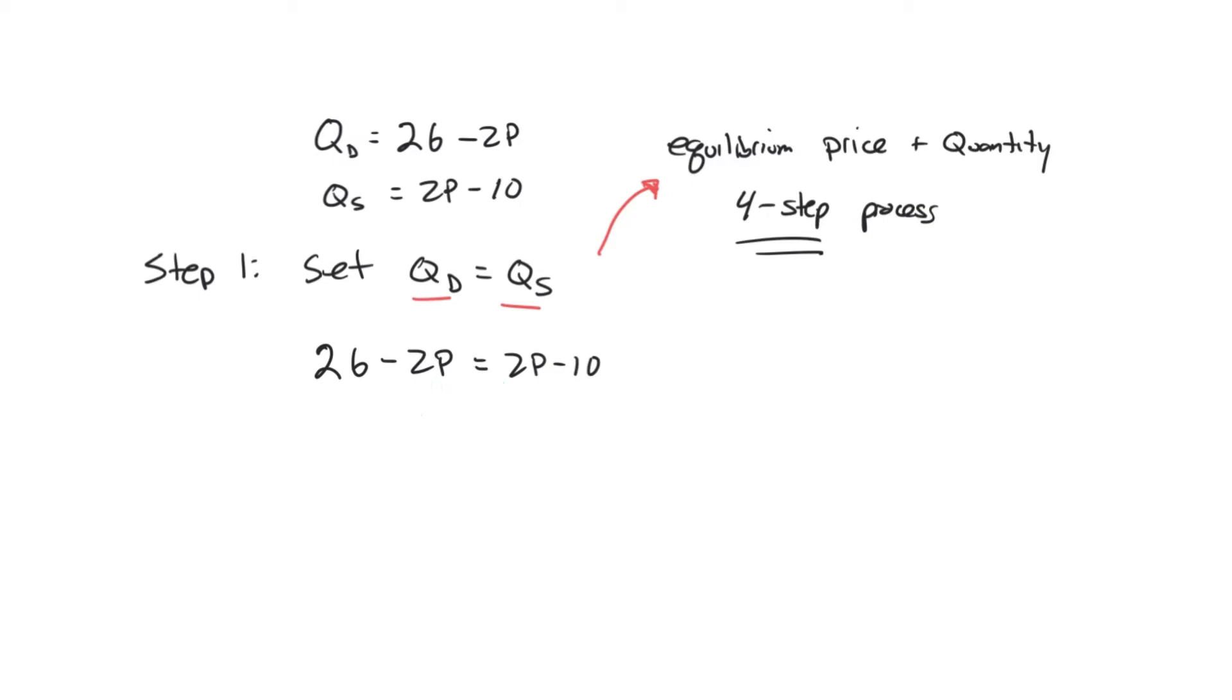So our next step, our step two, is going to be to combine the like terms. And what I mean by that is we've got 26 minus 2P on the left, 2P minus 10 on the right. I need to get my P terms together and my constant terms together. So we'll do some basic algebra here.